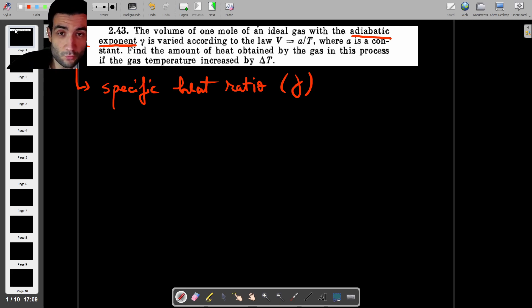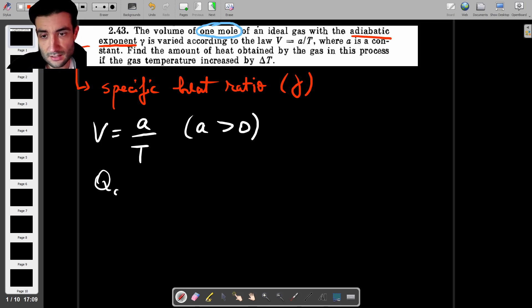The volume of one mole of an ideal gas - this problem is dealing with moles rather than kilograms. The volume is varied according to the law V equals a over T where a is a positive constant. And we're asked to find the amount of heat obtained by the gas in this process. So basically how much heat is absorbed by the gas if the temperature raises by an amount delta T.